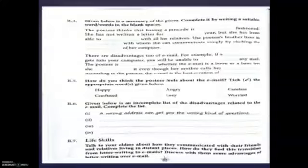Let's do the first question B4: given below is a summary of the poem — complete it by writing a suitable word or words in the blank spaces. Children, those who have recited the poem must be aware about the answers. Okay, let's try.